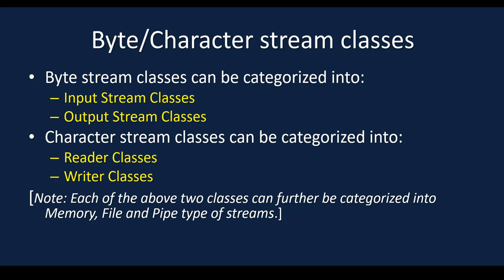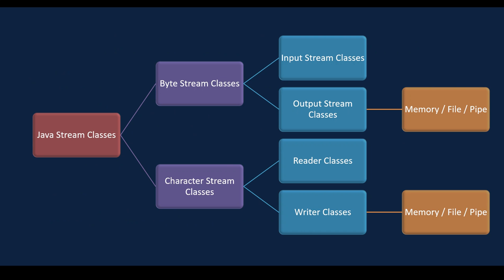Memory is temporary storage where data is held until it is stored into the file. File is where data is stored permanently — once the program completes, data in memory is erased, but data in the file is stored permanently. Pipe is used when you want to move data to two different devices, for example, a monitor and a printer. This is also represented diagrammatically: Java streams has two categories — byte stream classes and character stream classes. Byte stream has input stream and output stream classes; character stream has reader and writer classes. Both have memory, file, and pipe sub-types.